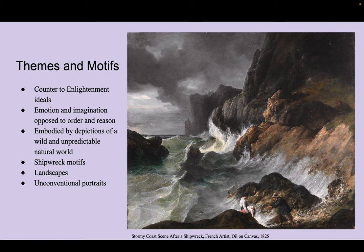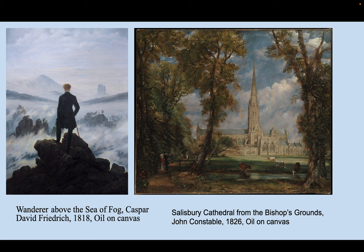This was most often embodied by depictions of a wild and unpredictable natural world — exaggerated nature, exaggerated emotion. Romantic artists wanted their viewers to feel strongly, and they did this with shipwrecks, which were a very common motif, landscape art, portraits, and scenes of events meant to capture emotion rather than be entirely accurate.